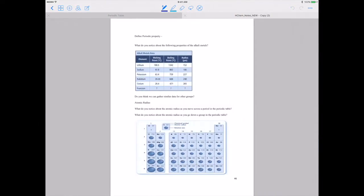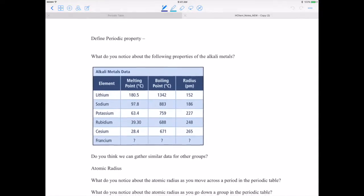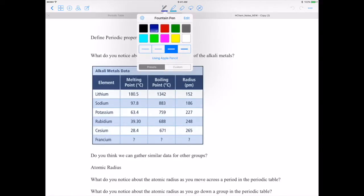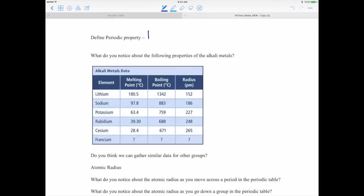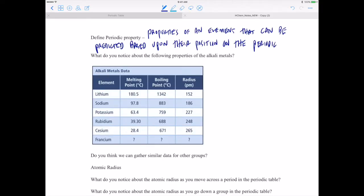Okay, so just a little bit of review there, I hope, for you. Alright, let's do a little bit more on this video. Let's define periodic property. We've defined the periodic law. The definition for periodic property is similar. This is properties of an element that can be predicted based upon their position on the periodic table.